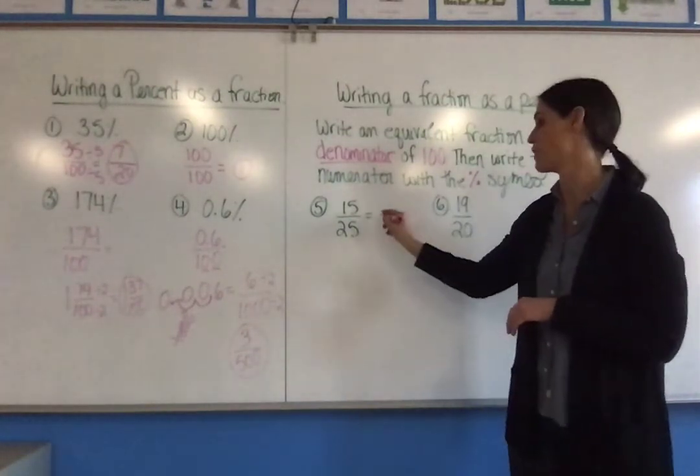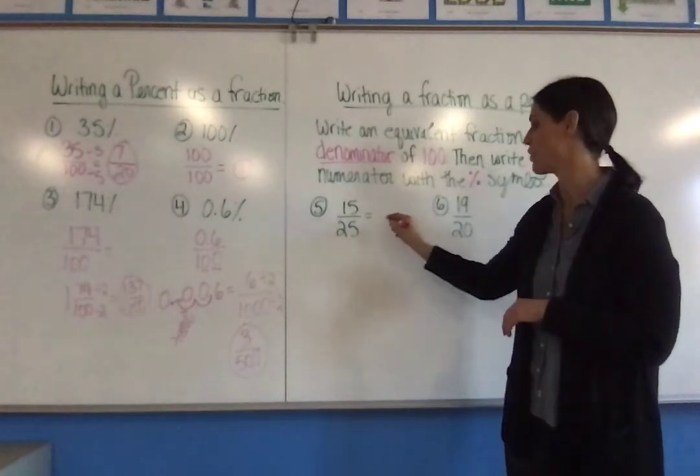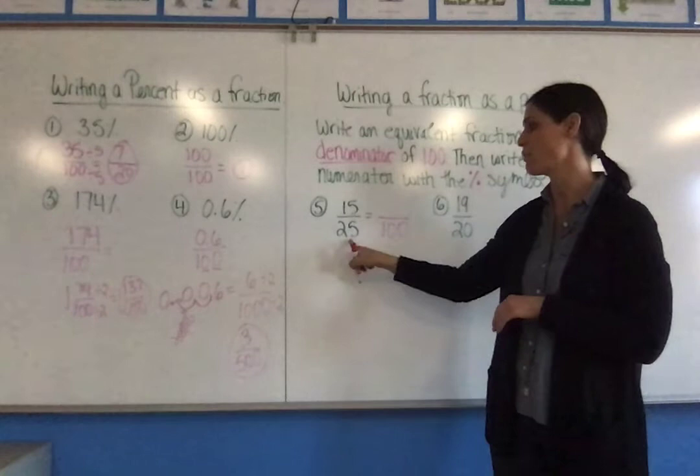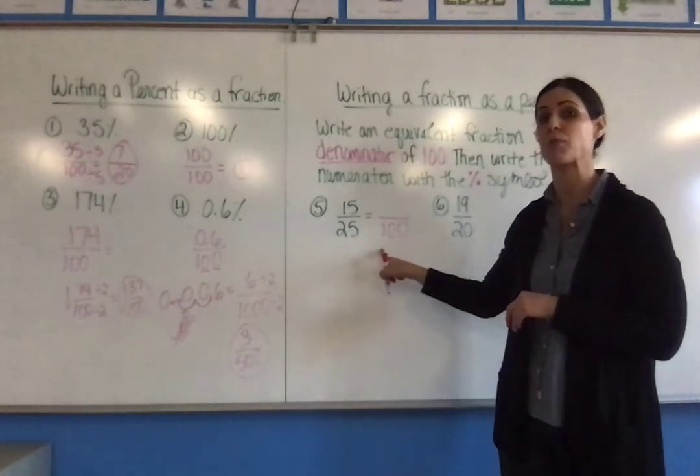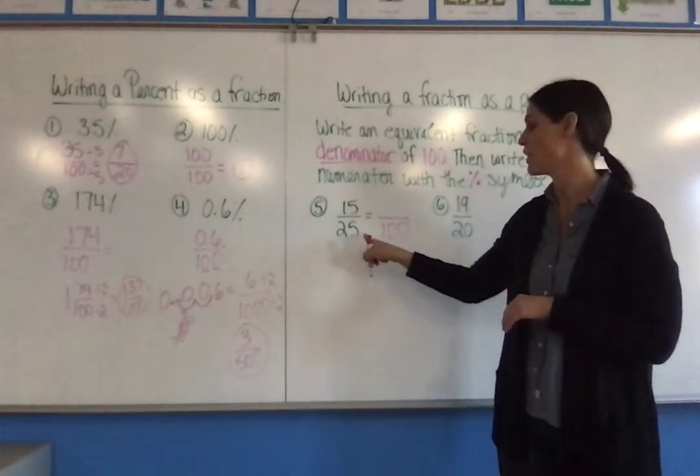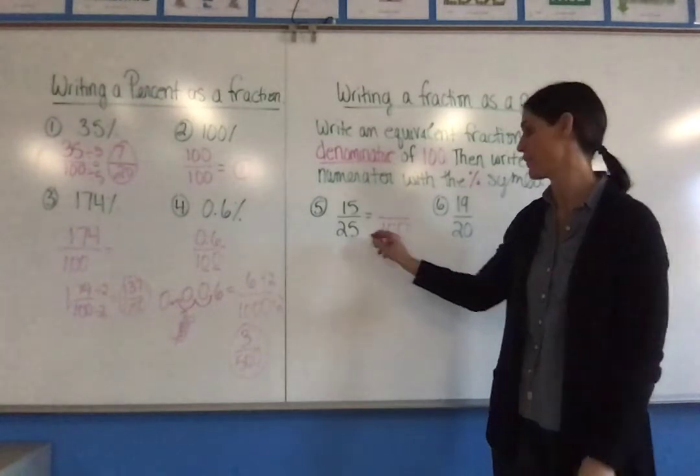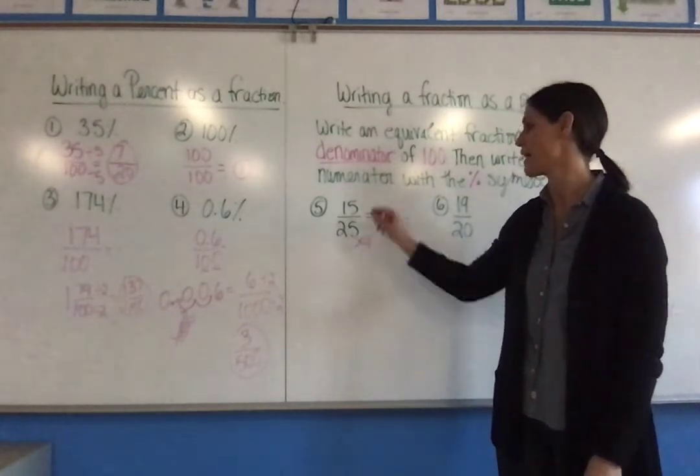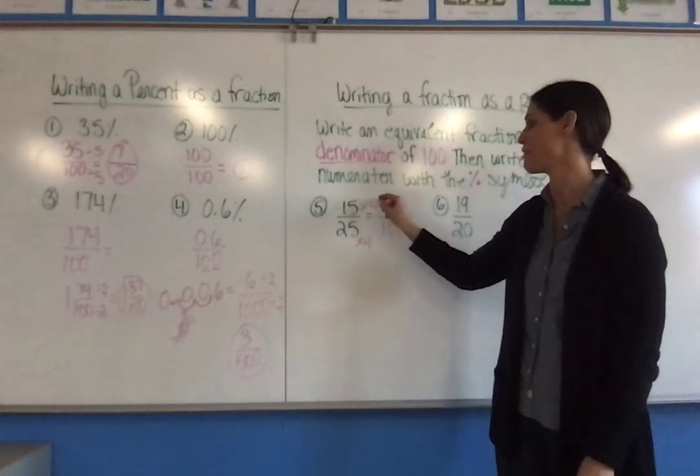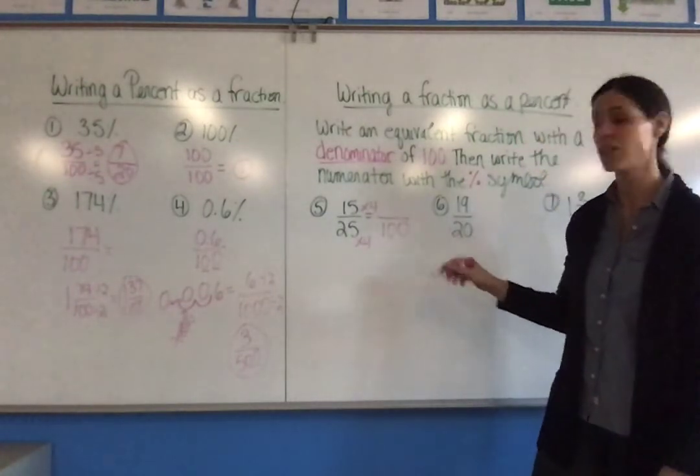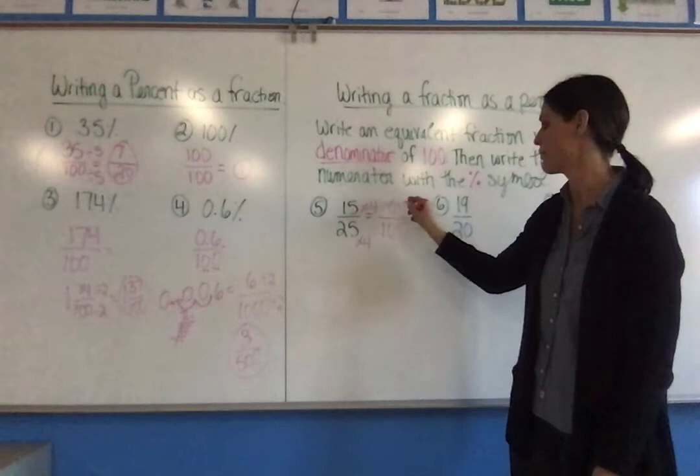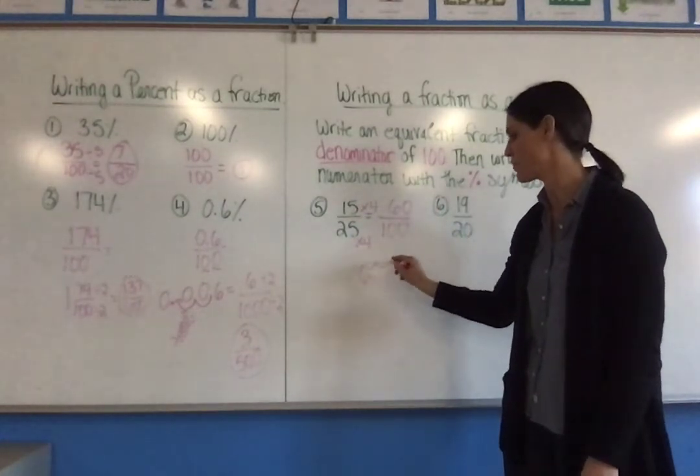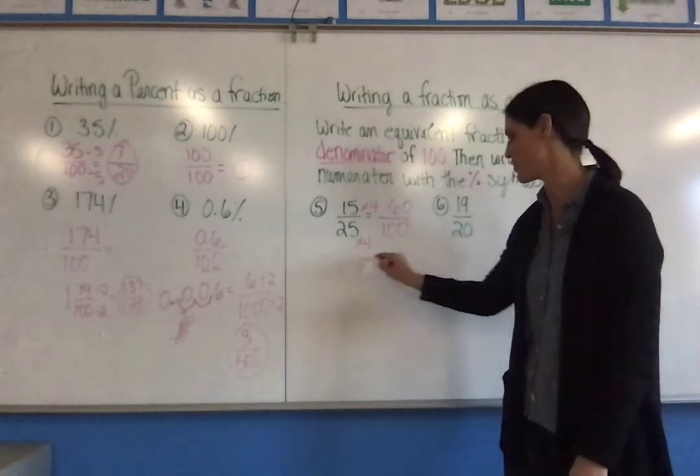I start with 15/25, so I'm going to write an equivalent fraction with a denominator of 100. Just like we did with ratios or ratio tables, I have to ask myself, 25 times what number gives me 100? That would be 4. To keep it equivalent, I have to multiply the numerator by 4 as well. And 15 times 4 is 60. Now that I have 60/100, I can write this as a percent, which is 60%.